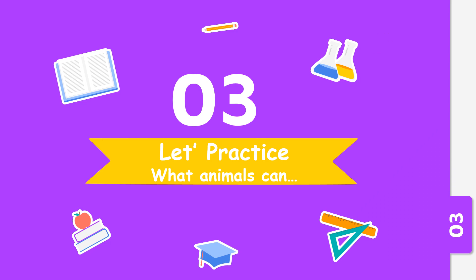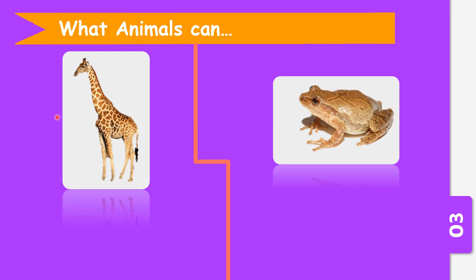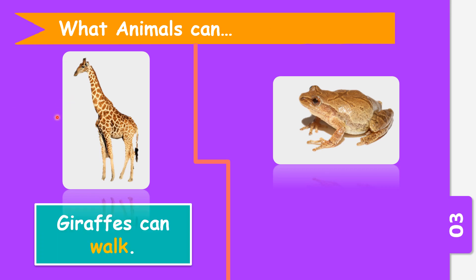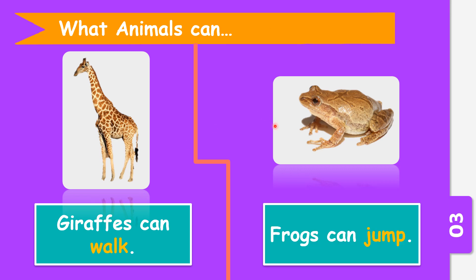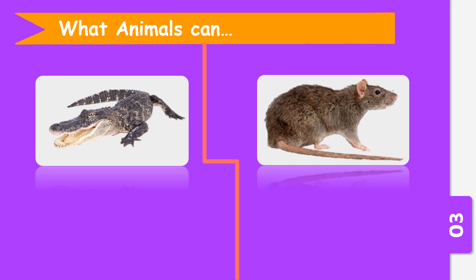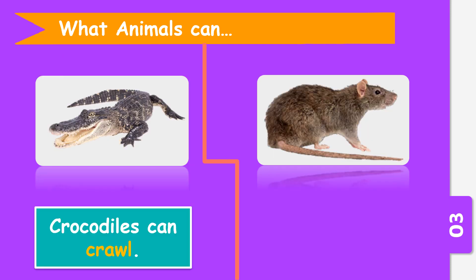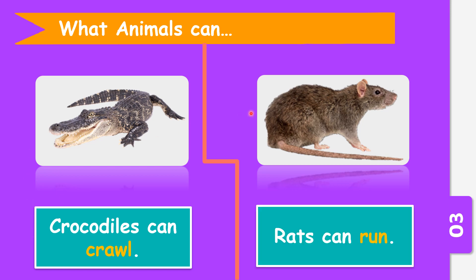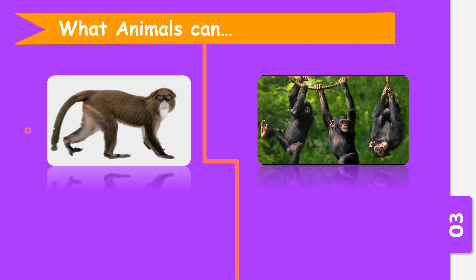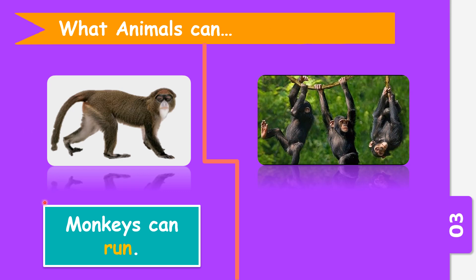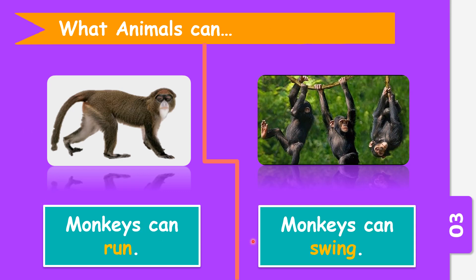Let's see what animals can do. We have here giraffe — giraffes can walk. What about frog? Frogs can jump. What about crocodile? Crocodiles can crawl. What about rat? Rats can run. What about monkey? Monkeys can run and swing.